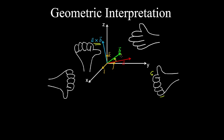Furthermore, if we construct a right-angled triangle between a and b and designate the angle between both vectors as theta, then the height is the magnitude of b times sine theta. Multiplying this by the magnitude of a gives the area of the parallelogram between both vectors — the base of the parallelogram by the altitude or height.